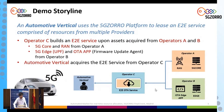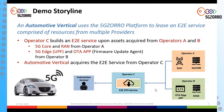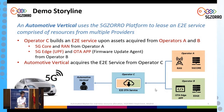In this demo we have four actors: Operator A, B, C, and Operator E. Operator E is acting as an automotive vertical that is to join the 5GZero marketplace and then lease an end-to-end service in order to enable the firmware update of 5G-enabled machines and cars, allowing the cars to connect to an edge server and pull the firmware updates.